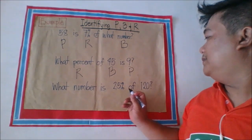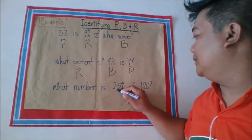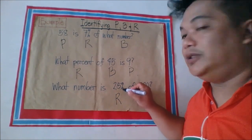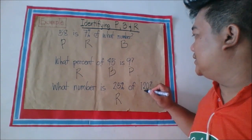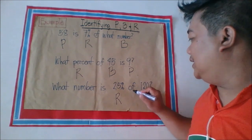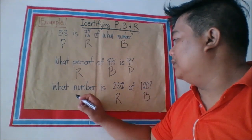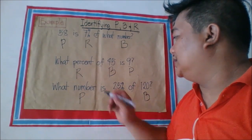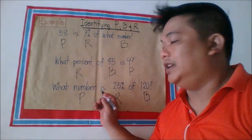Next example: What number is 25% of 120? Here, 25% is the rate because it is followed by the percent sign. 120 is the base because it is followed by the word 'of.' And 'what number' is considered the percentage because it appears before or after the word 'is.'